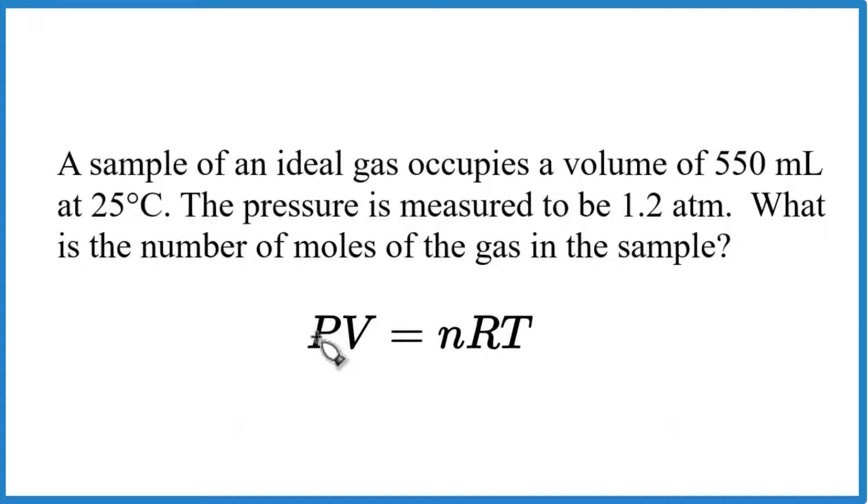When we look at P, we've got a pressure here, that's in atmospheres. We have a volume that is 550 milliliters, and we're going to need to change that to liters. I'll show you why in a minute. We have a temperature here, that's 25 degrees Celsius. We'll need to change that to Kelvin. And then the moles, we don't know what the moles are. That's what we want to find.